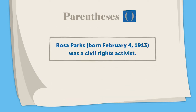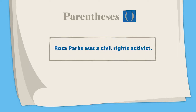"Rosa Parks, born February 4, 1913, was a civil rights activist." The phrase "born February 4, 1913" is separated from the rest of the sentence by parentheses because the information is more of an aside that breaks the flow of the sentence. It is not necessary to the sentence. When the phrase is removed, the sentence reads: "Rosa Parks was a civil rights activist."